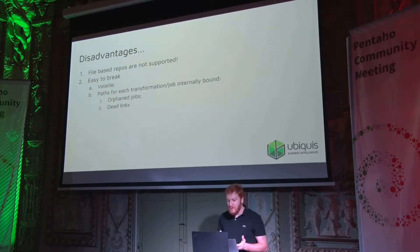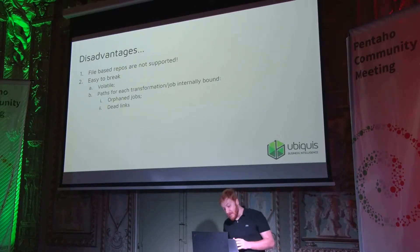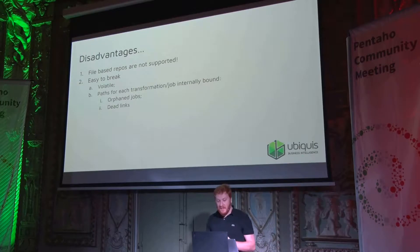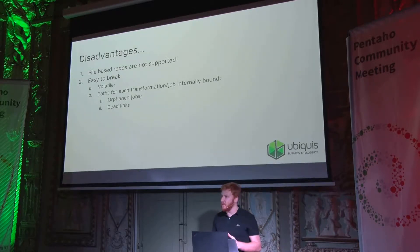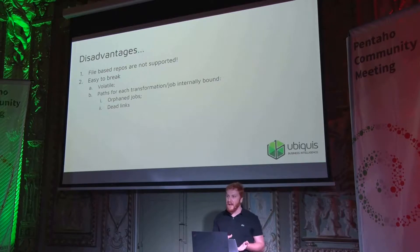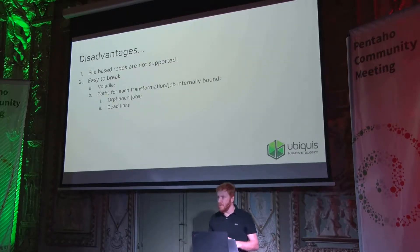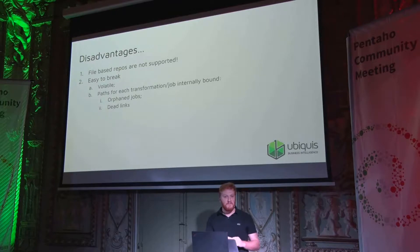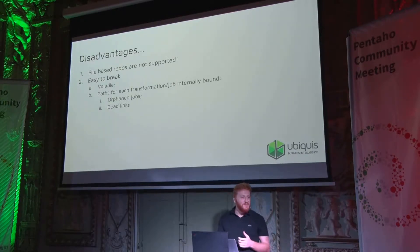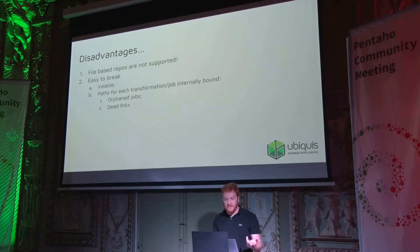But there are also some disadvantages. The first one is that it's not supported and it's easy to break — it's volatile. PDI especially, when dealing with file-based repositories, has the paths for the transformations and jobs bound inside their XML structure, completely separate from the actual path in the file system. Which means if anyone changes anything in the file system, PDI doesn't really know. When you save files, rename files, or do anything like that, you start seeing transformations pop up out of place, jobs pop up where they shouldn't be, and links that are just dead.